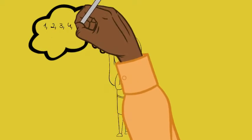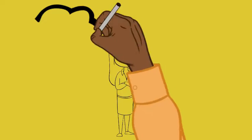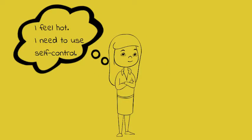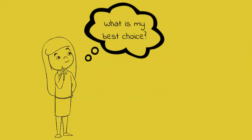She stops and counts to 10, allowing herself to cool off and think. Diana thinks of how her body feels. 'I feel hot. I need to use self-control.' She thinks to herself, 'What is my best choice?'